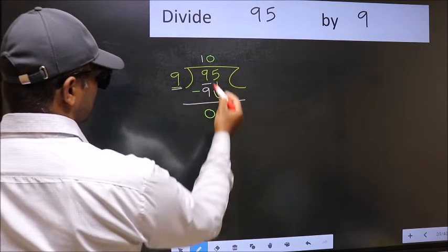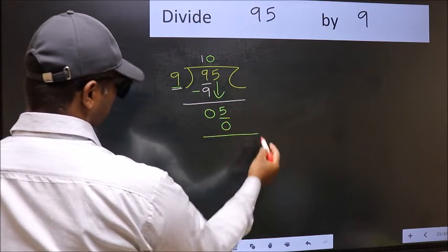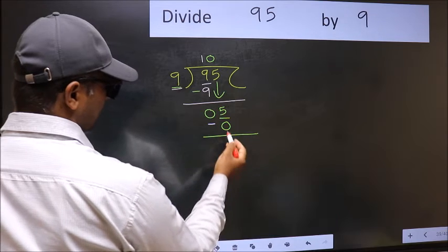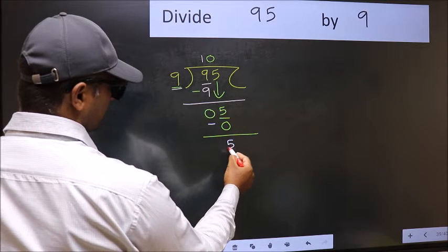So, 9 into 0 is 0. Now you should subtract. 5 minus 0 is 5.